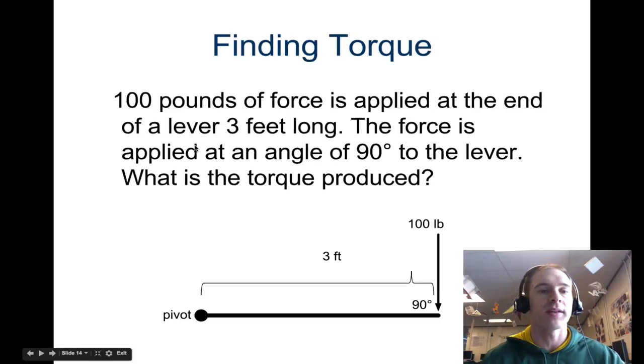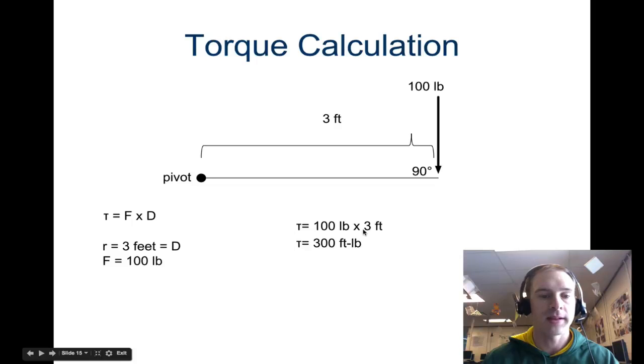So let's do a practice. 100 pounds of force is being applied at the end of a lever 3 feet long. The force is applied at 90 degrees. So the torque produced? 90 degrees makes it easy. So here's our picture. We have a force of 100 pounds and the distance is 3 feet. So torque is force times distance. 100 times 3 ends up being 300 foot-pounds. So again, force times distance, the radius is 3 feet, the force is 100 pounds. 100 times 3 is 300. And since it's 90 degrees, sine of 90 is 1, so it just kind of goes away.